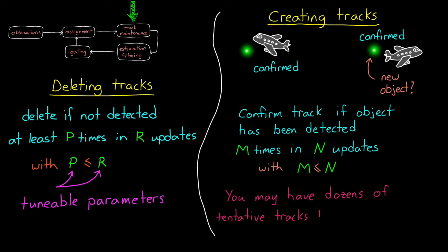So in this way, you may have dozens of tentative tracks that you are maintaining due to false positive measurements but are deleting before they ever become confirmed.